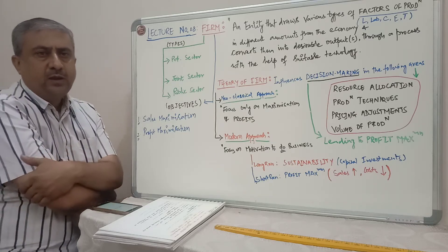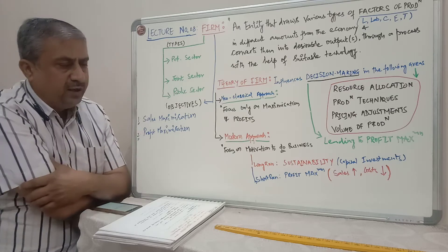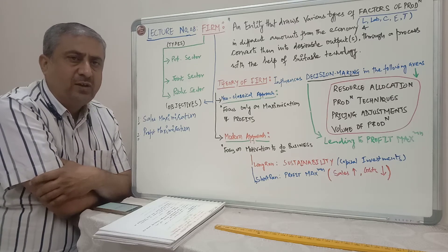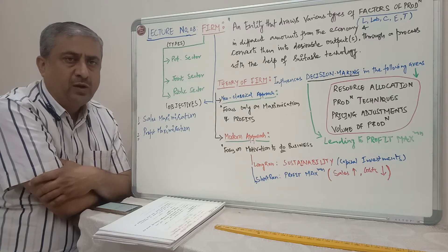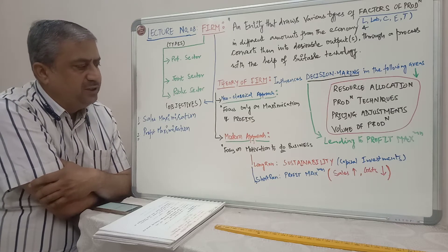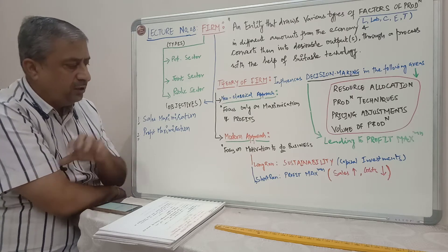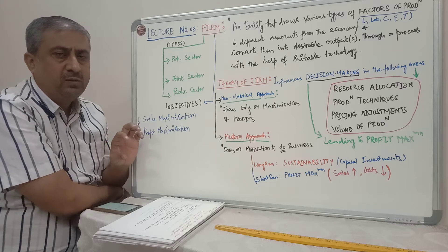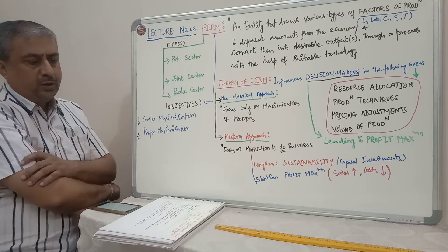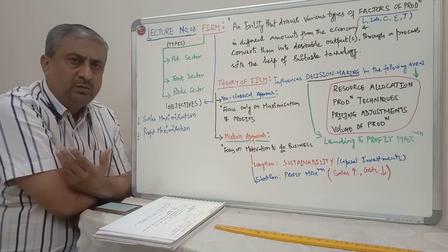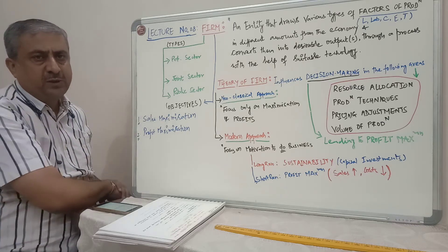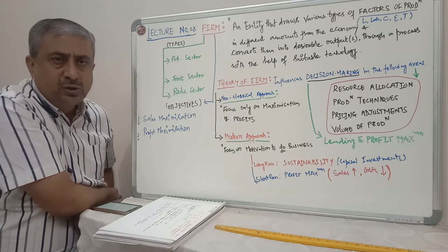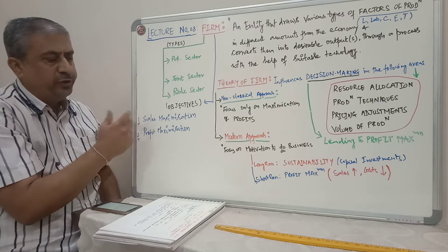Every firm is established for two different reasons: sales maximization and profit maximization. Sales maximization means increasing the sales; profit maximization means going for higher, larger profits. These are the sole objectives of having any kind of firm. If these two objectives are not there, then the firm is a joint sector enterprise in the form of the cooperative sector. To achieve these, you need certain methodologies, processes, concepts, and theories.